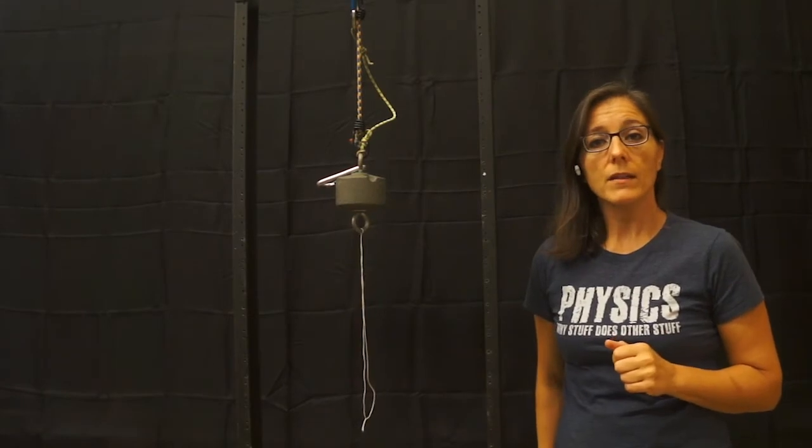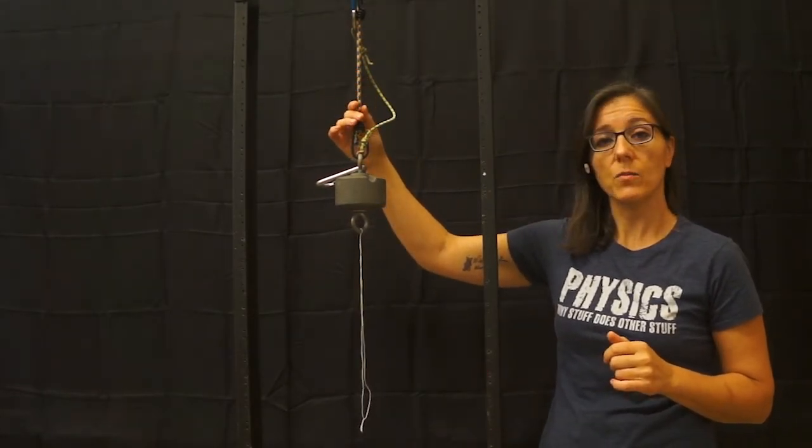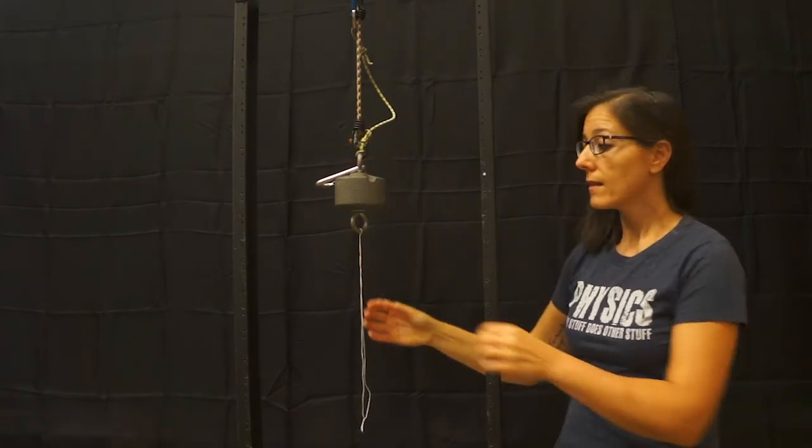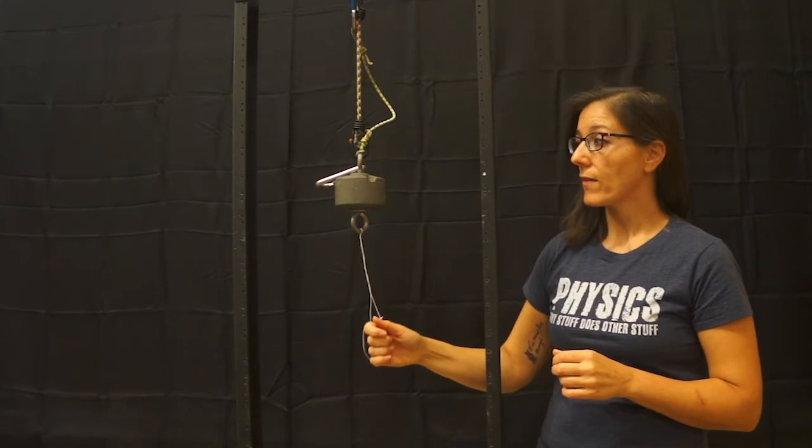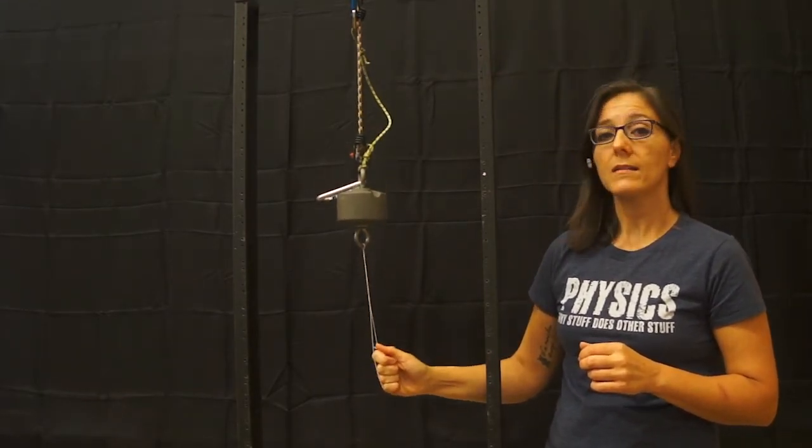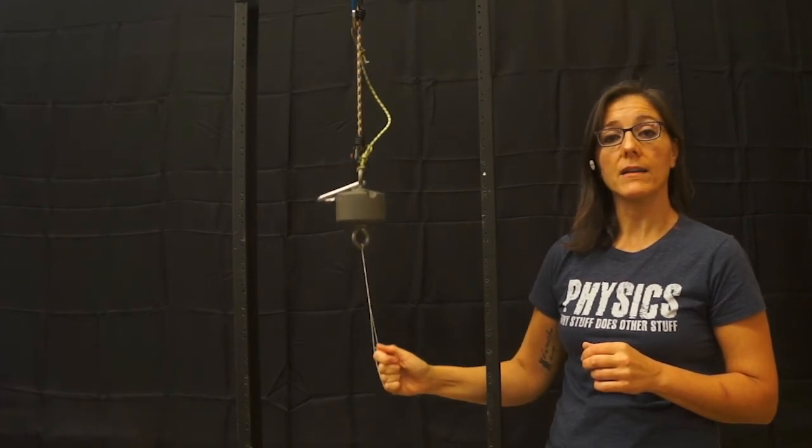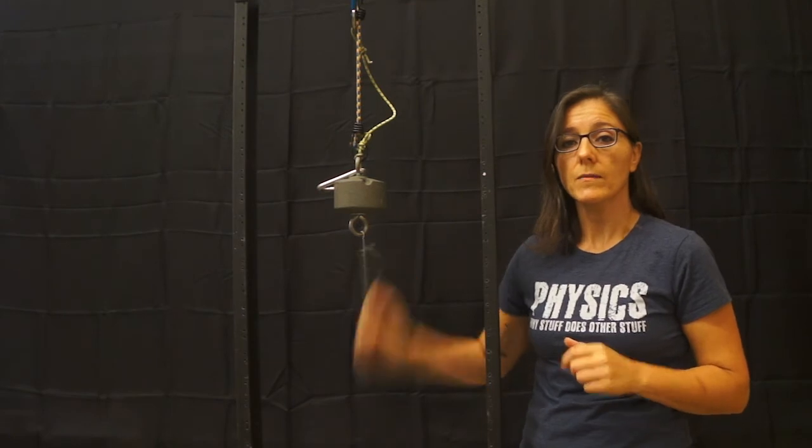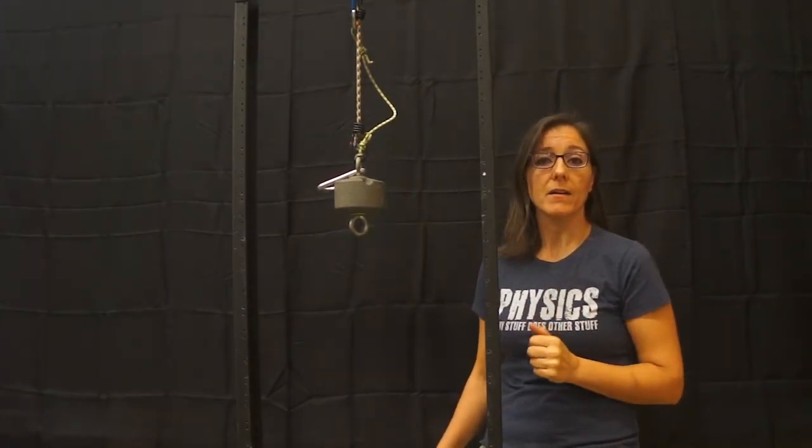We can take a look at this again by using a small bungee cord as the support instead of a string. This allows us to slow down the effect. Now, if I tug on the mass slowly, we can see the bungee cord is in fact affected.